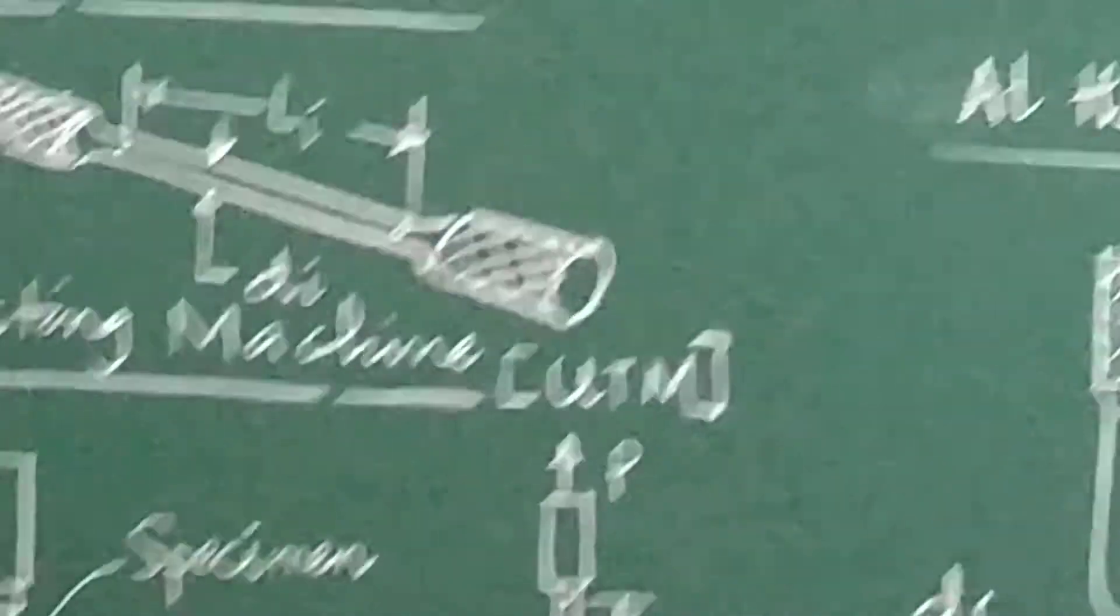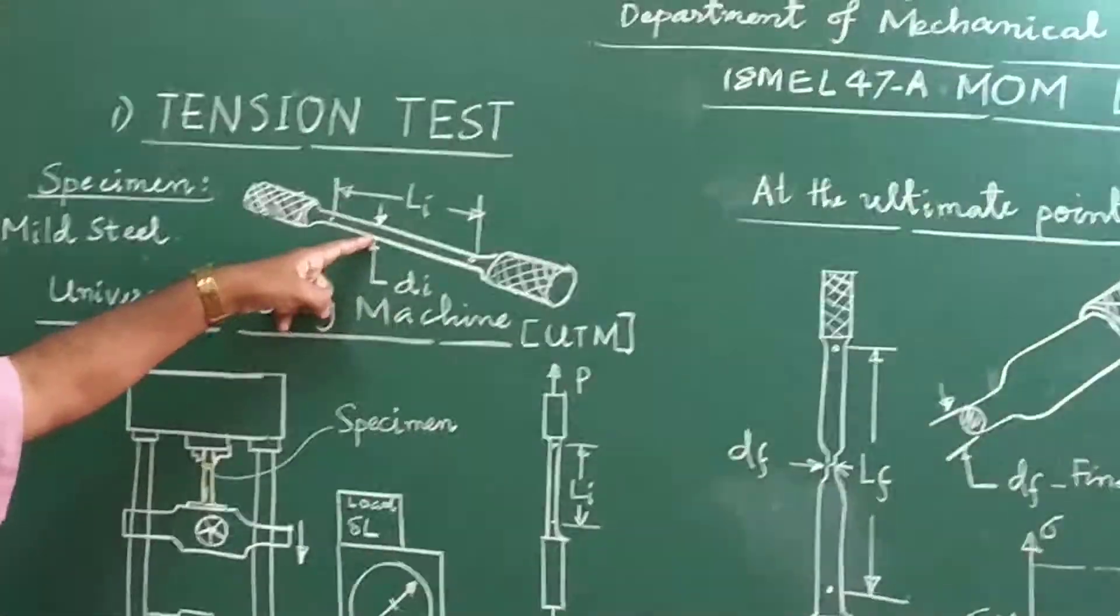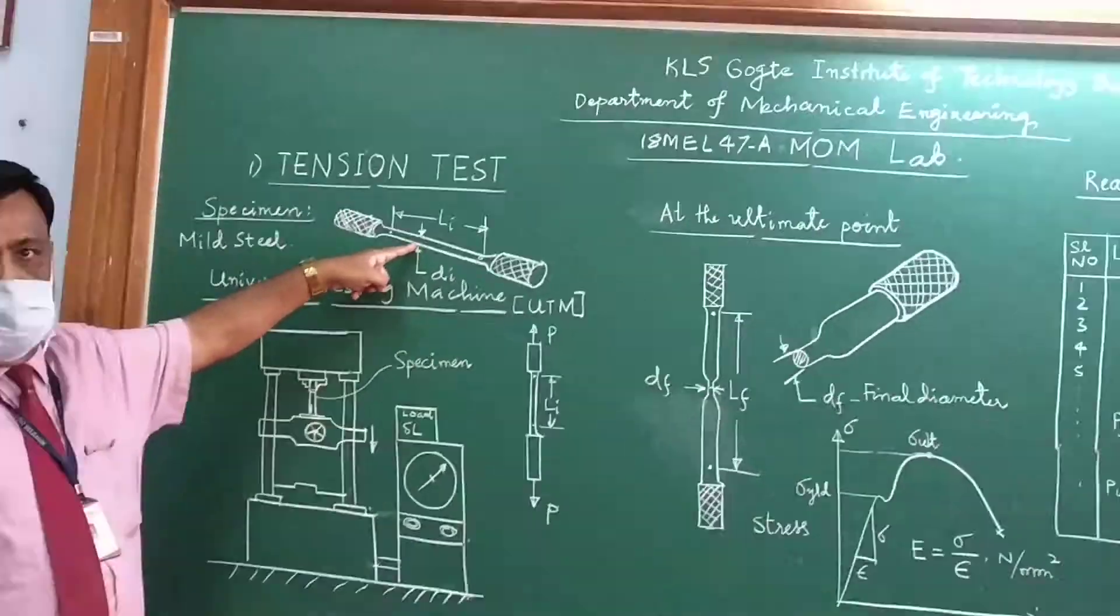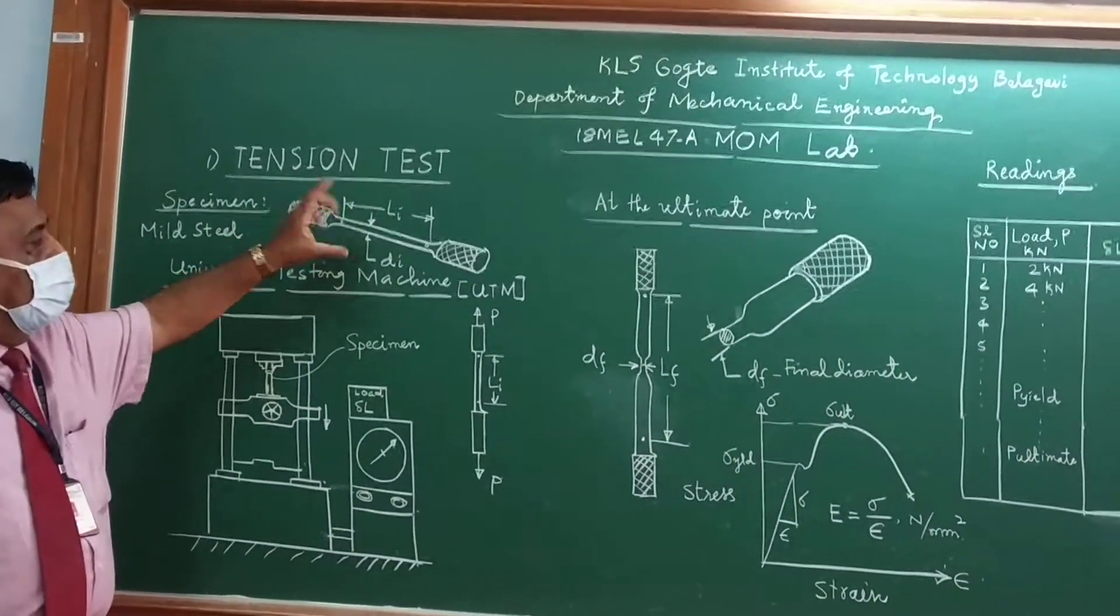With the help of a vernier caliper, you have to measure the initial diameter also, Di. This diameter has to be noted down.